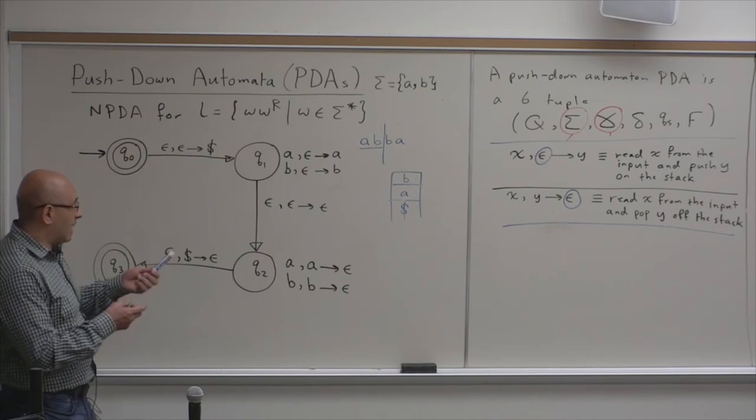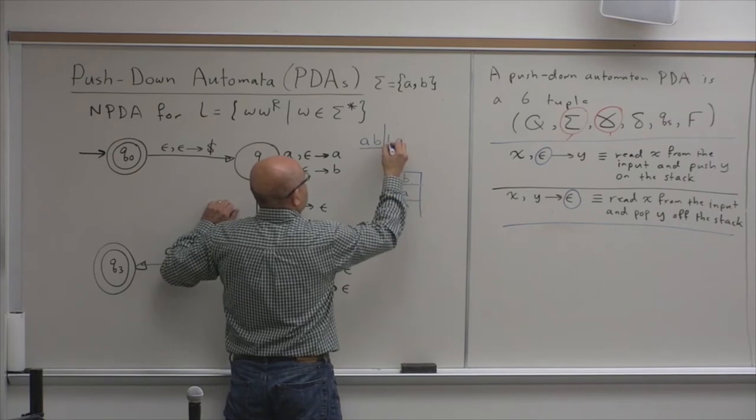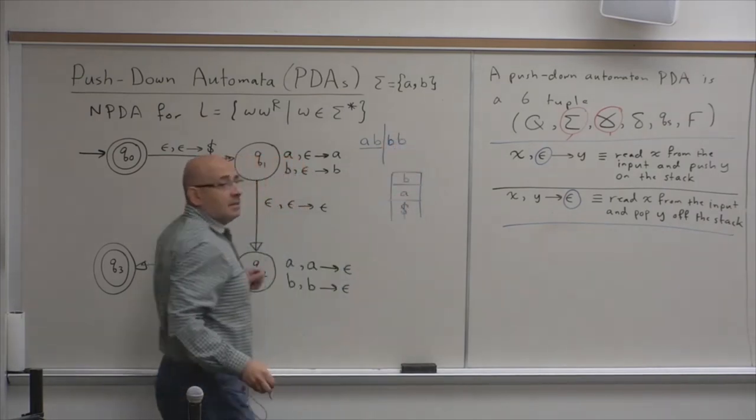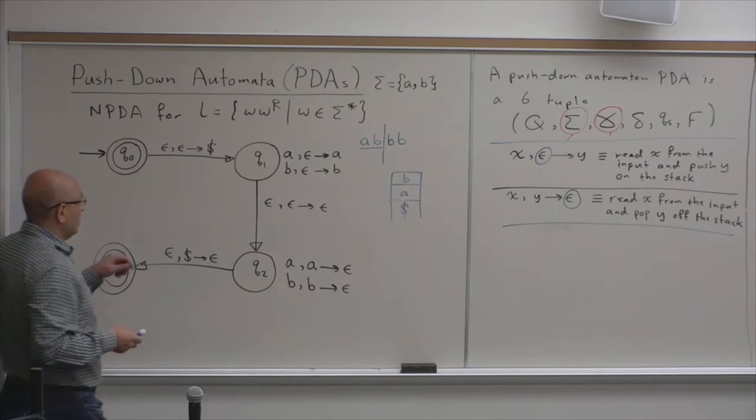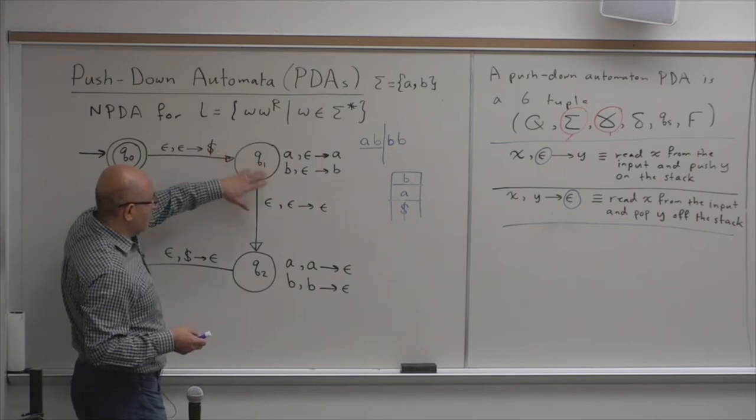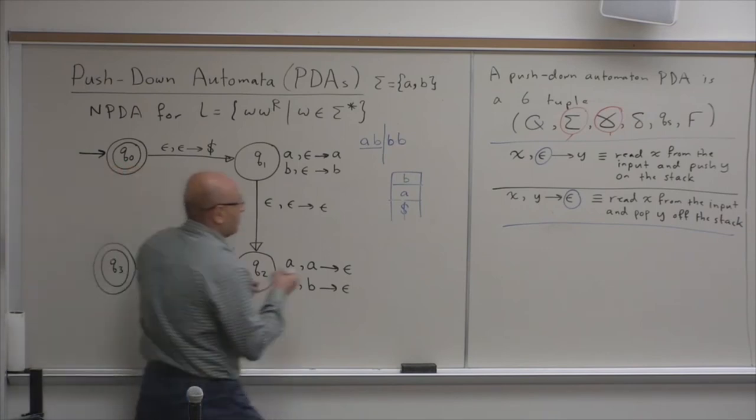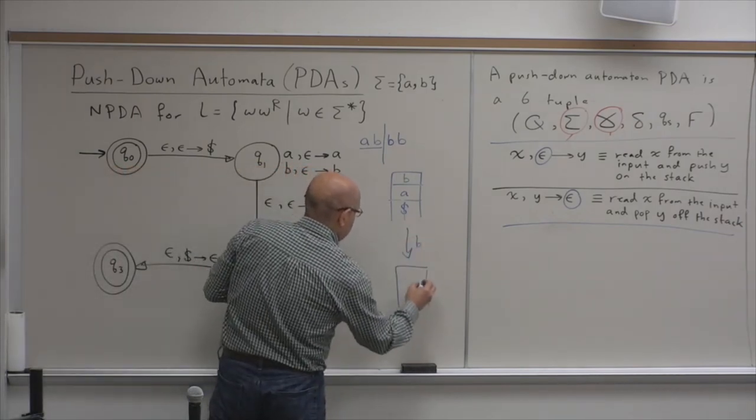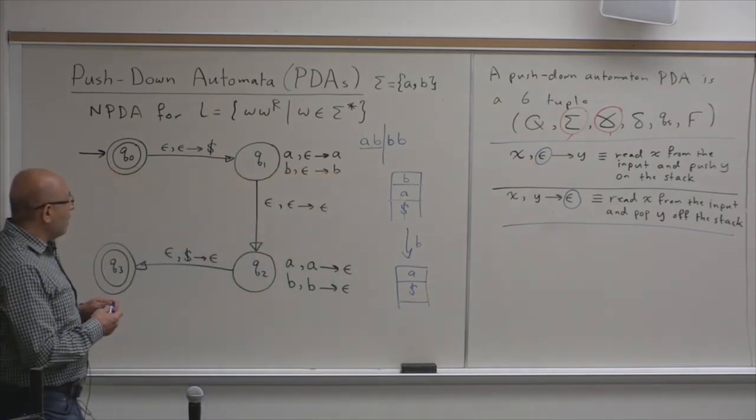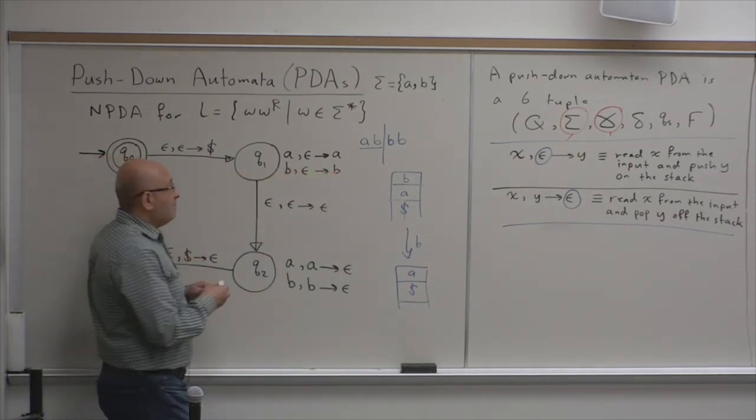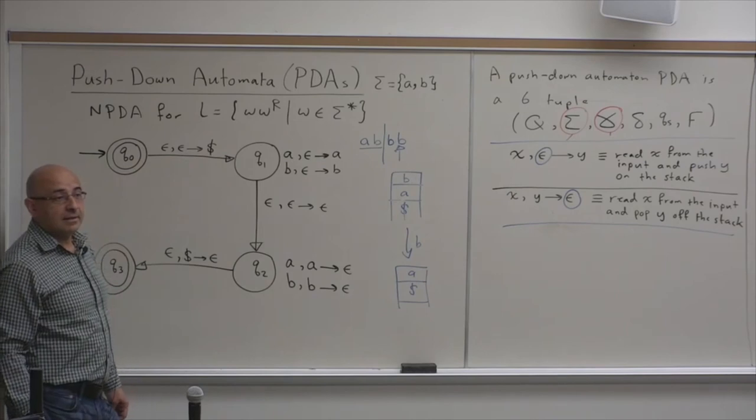Now, if we put a string that doesn't belong to the language, like what? Like, B, let's say B, B. This doesn't belong to the language. So, there is no way that you can get this accepted. Of course, you'll push, and you'll get this. Then when you pop, you pop a B, and you will get a dollar sign.